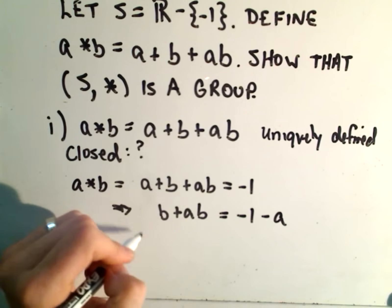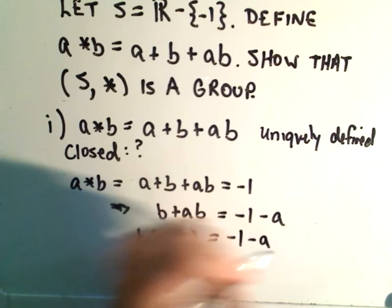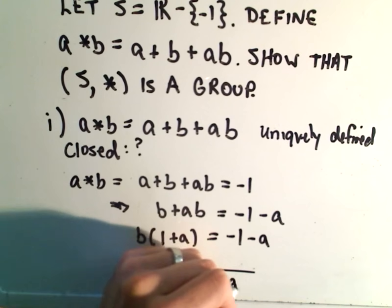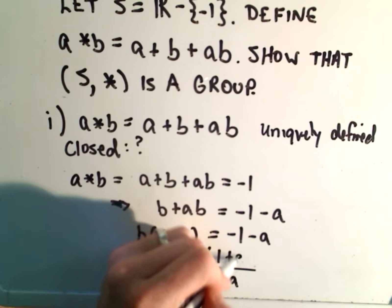We can factor B out of the left side and get one plus A. On the right side, we still have negative one minus A. If we divide, we'll get one plus A on the bottom. If I factor negative one out of the top, we'll get one plus A. This gives us negative one.